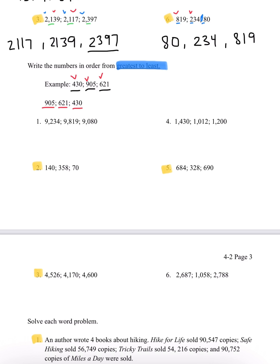Number 2, we have 140, 358, and 70. Looking at the 100th place — we have a 1, a 3, and nothing (which we consider a 0). 0 is the least, so 70 goes in the back. Then 3 is greater than 1, so 358 is our greatest number and goes in the front. The order from greatest to least is 358, 140, 70.